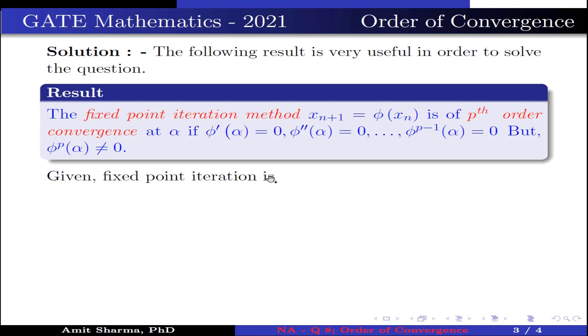Now, given fixed point iteration is x_{n+1} = ψ(x_n), where n ≥ 0. Here, ψ(x) = 3 + (x - 3)³, x ∈ (2.5, 3.5).